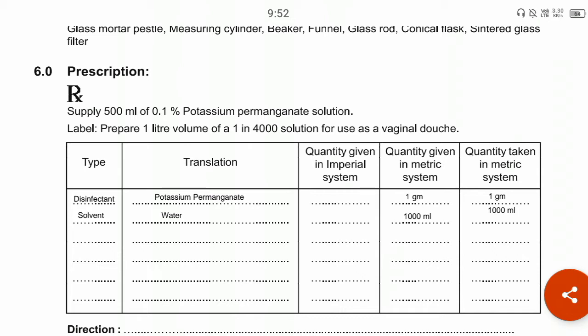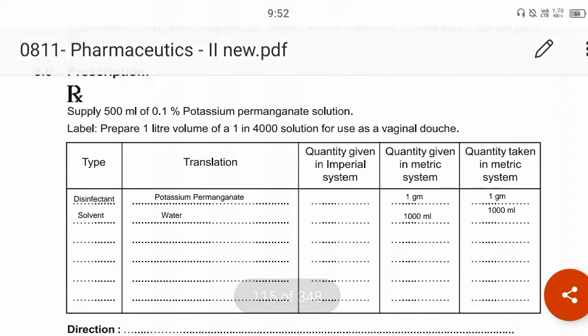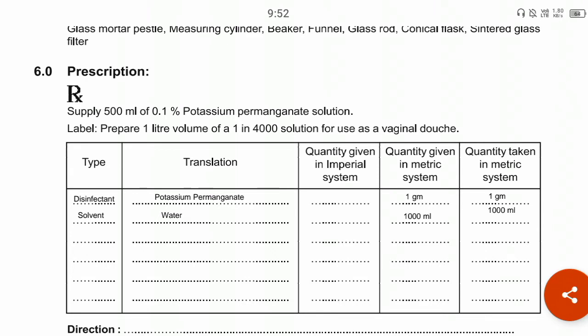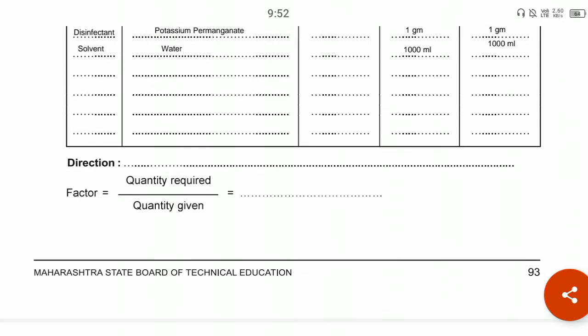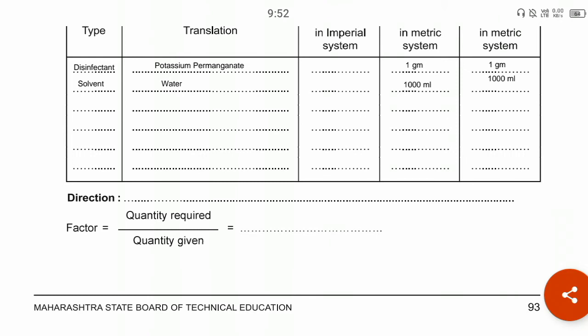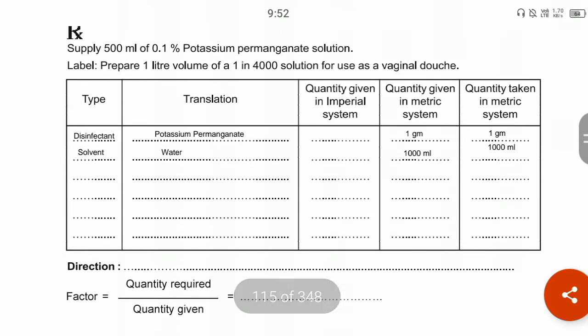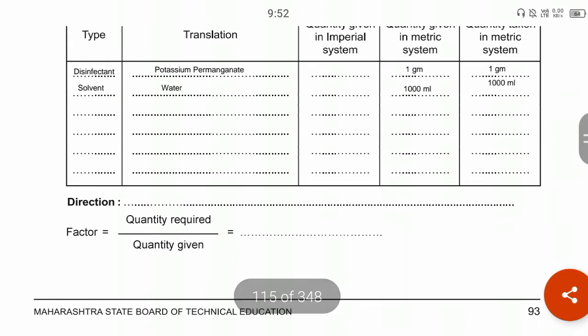The quantities are 0.1%, meaning 1 gram of potassium permanganate in 1000 ml of water. We are preparing 1000 ml of 0.1% potassium permanganate solution. The quantities are given in metric system, so no imperial system calculation is needed. The direction to mention is 'for external use only.' You can calculate the factor and required quantity accordingly for preparation.